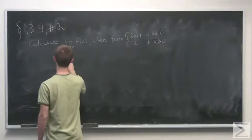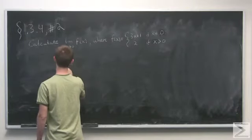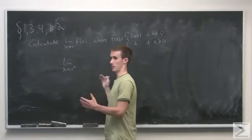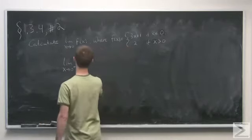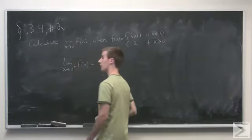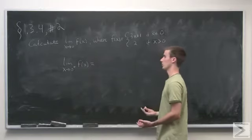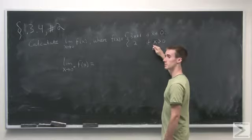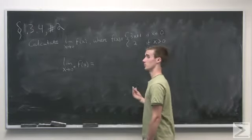So let's take the limit as x goes to zero from the right, where this little plus sign means we're coming at it from the right, of f of x. Now if we're coming from the right, we're going to be coming from values greater than zero. So we're going to be looking at the second part of the piecewise defined function, so 2.